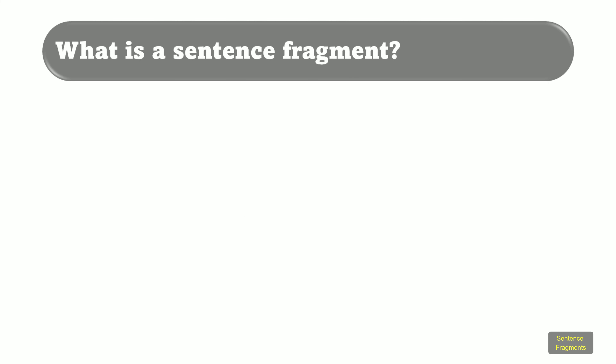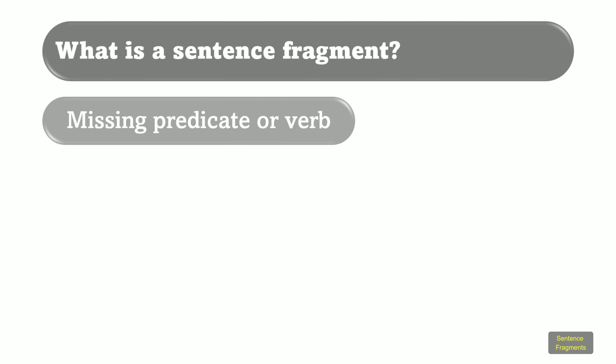You also have a sentence fragment when you know the subject, or who the sentence is about, but you do not know what else happened — that is, the predicate is missing, or a verb is missing. Take a look at these examples.